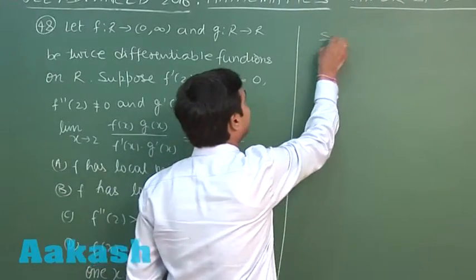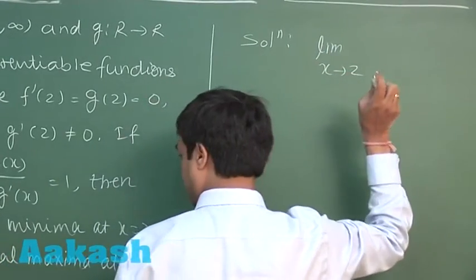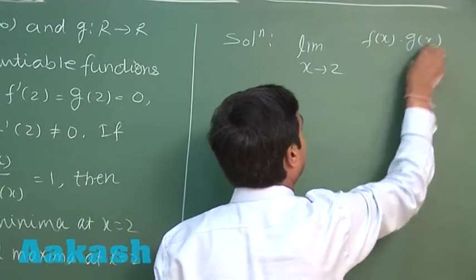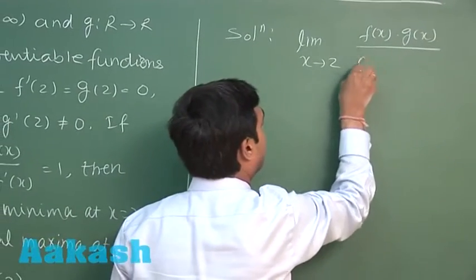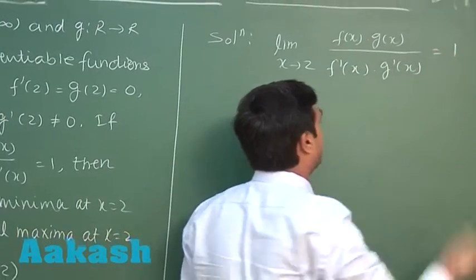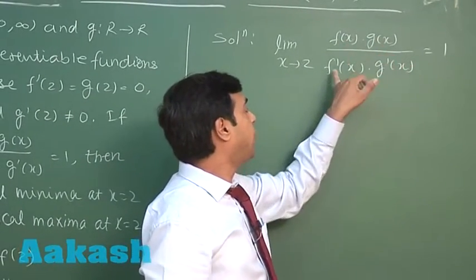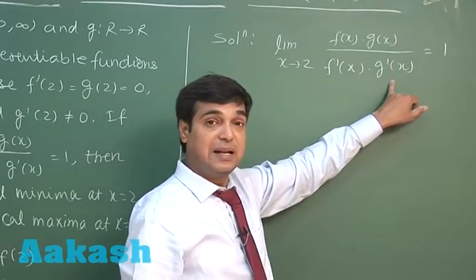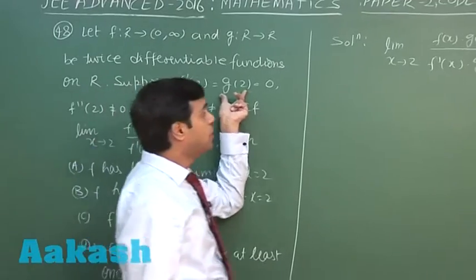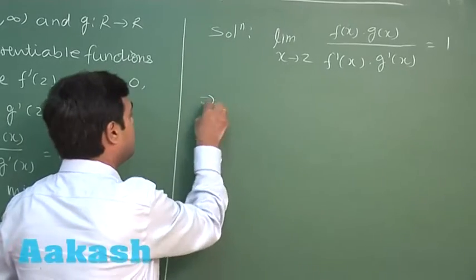So starting with this limit part, limit x approaching to 2, f(x) times g(x) upon f dash x times g dash x is equal to 1. If I put x as 2, I observe f(2) g(2) upon f dash 2 g dash 2. Since it is given in the question that f dash 2 and g of 2 both are 0, so this gives me 0 by 0 form, means L'Hôpital is applicable.